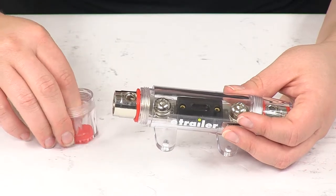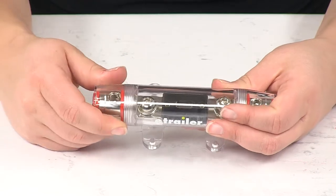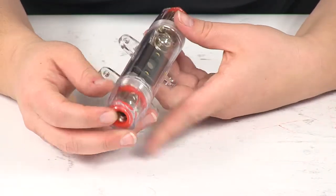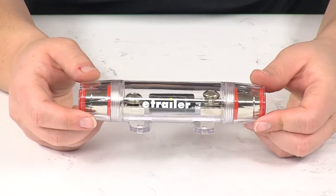Now these little grommets are going to prevent any dirt or debris from getting in there and damaging your connection or causing any intermittent power. There's the grommet on the end as well as one inside the threads there. So it's just going to provide you a little bit of extra protection from the elements.